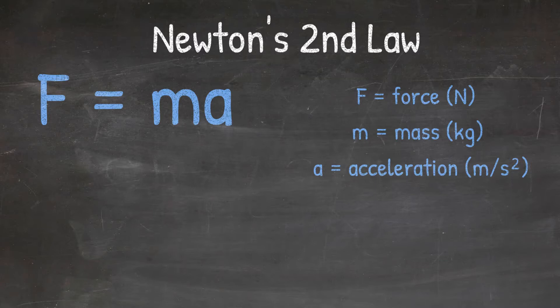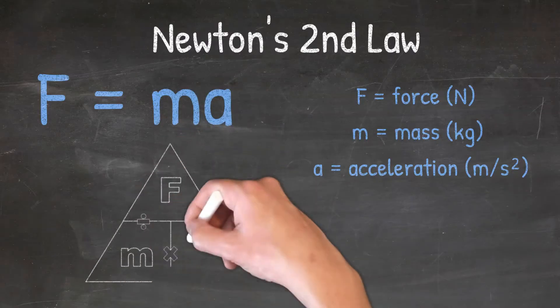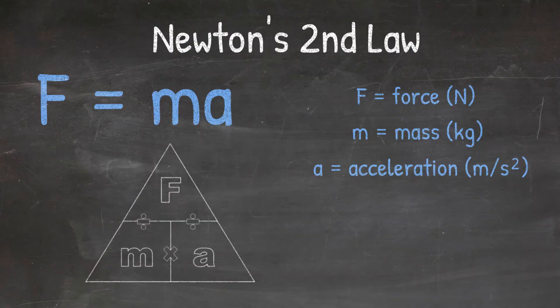We can solve this formula by knowing two of the variables and then we'll solve for the third. An easy way to solve this formula is to use the triangle setup shown here. When using the triangle, all you have to do is cover up the letter you're solving for and the triangle will tell you whether to multiply or divide.